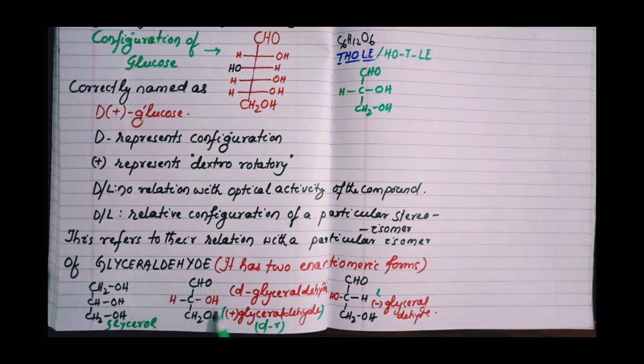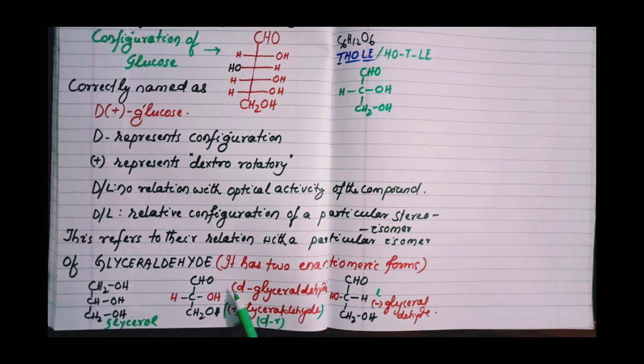And this is D-glyceraldehyde because it rotates the plane polarized light towards right. And it can be remembered by a trick DR: DR means dextrorotatory or D-glyceraldehyde, R means right position. This OH group is present on the right position.